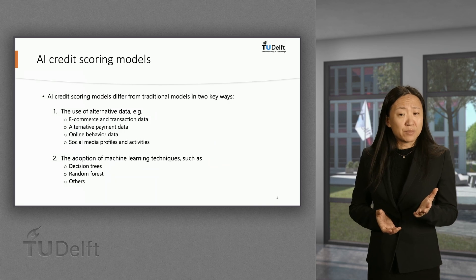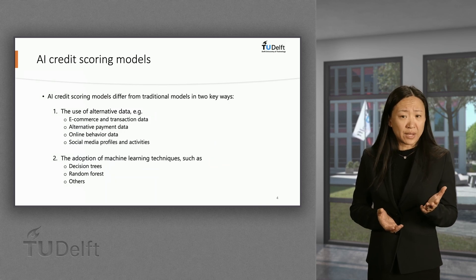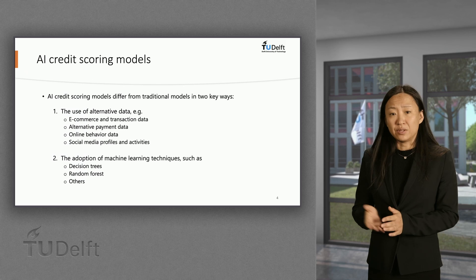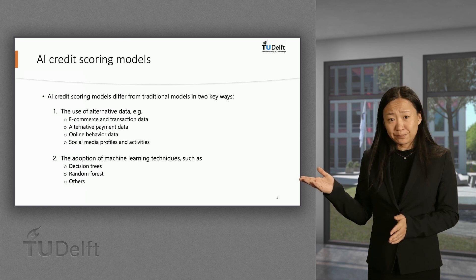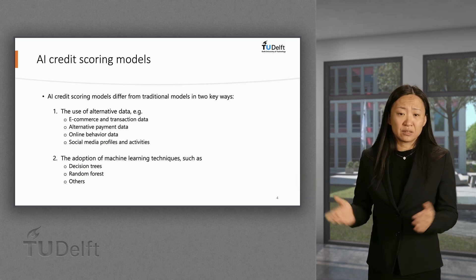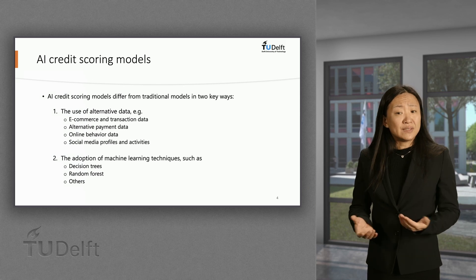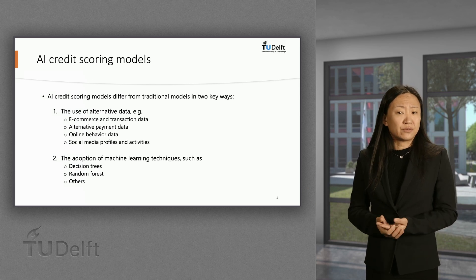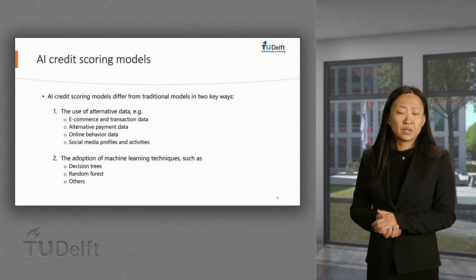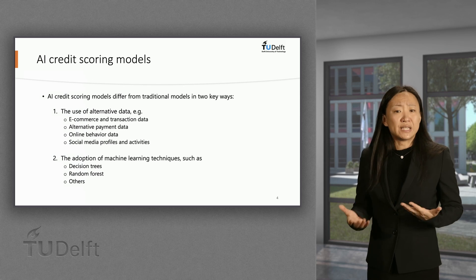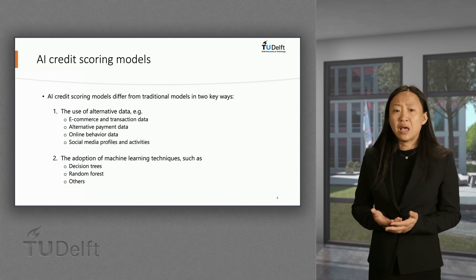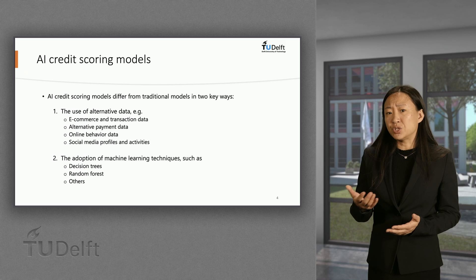AI credit scoring models differ from traditional ones in two key ways: the use of alternative data and the adoption of machine learning techniques. The alternative data include, for example, e-commerce and transaction data, which provides insights into spending patterns, types of purchases, and overall financial behavior.